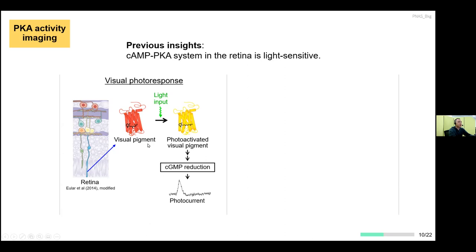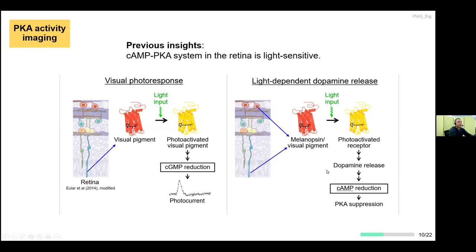The photosensitive mechanism of the cyclic AMP-PKA system in photoreceptor cells: the left panel shows the famous visual photoresponse — visual pigments in the outer segments of rods and cones are activated by light, driving the phototransduction cascade to regulate cyclic GMP and evoke photocurrent. In contrast, the cyclic AMP-PKA system depends on dopamine release from inner retina. In addition to visual pigments, melanopsin in intrinsically photosensitive retinal ganglion cells is involved, leading to dopamine release from dopaminergic amacrine cells into the intercellular space throughout the retina.